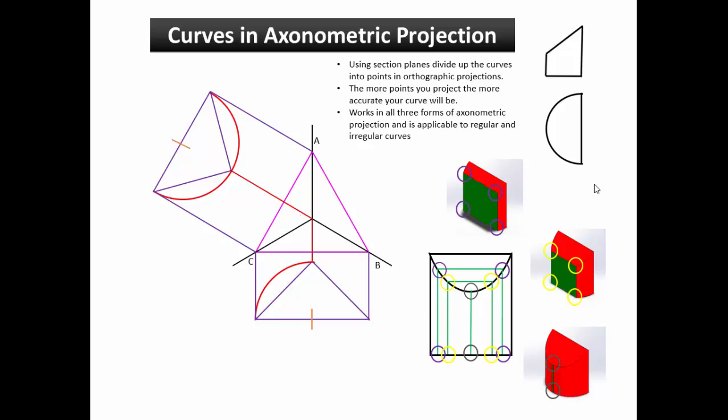To create these section planes, first divide up your curves in two of your orthographics. I'm using my 60 and 30 degree set square just for ease of use. Alternatively you could use vertical lines to divide up your orthographics.